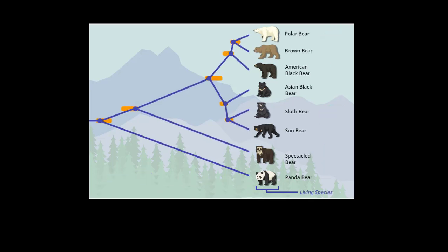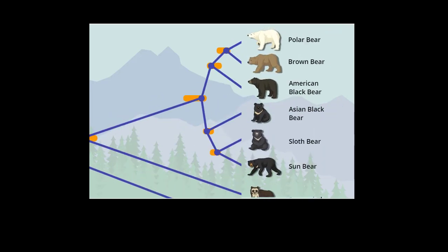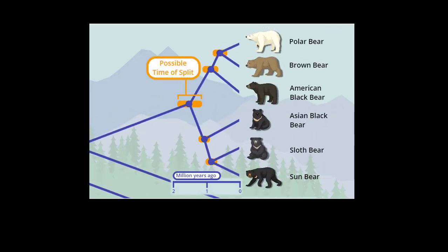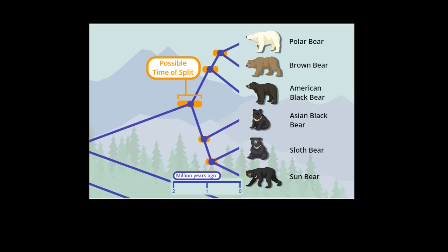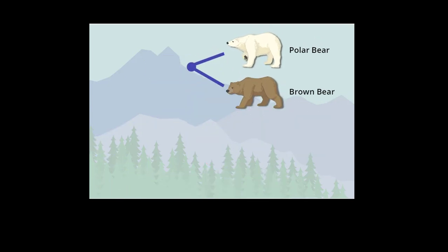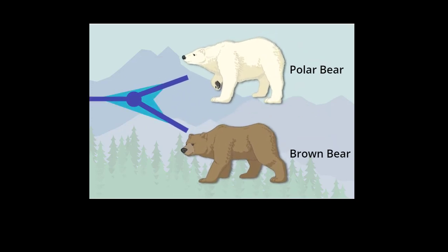Because of gaps or conflicting evidence, there is some uncertainty about exactly when the lineages split. For example, anatomical and geographic evidence show that polar bears and brown bears are very closely related. But because their lineages split relatively recently and within a short span of time, there is little fossil evidence of transitional forms. This makes determining the timing of the split a challenge.